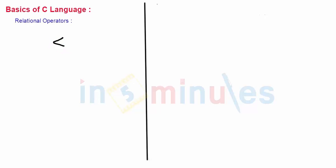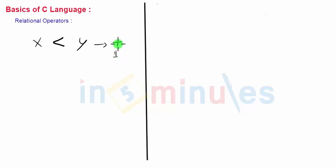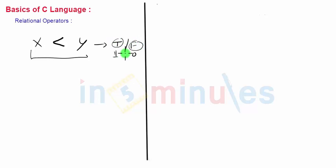A simple example: the less-than symbol checks whether the left value is less than the right-hand value. For example, if you write x less than y, this can generate only two kinds of answers. If x is less than y, the answer will be true, that is 1. If x is not less than y, the answer will be false, that is 0. So relational operators check the relation between two values and generate the answer as either true or false — which is 1 or 0 in C.